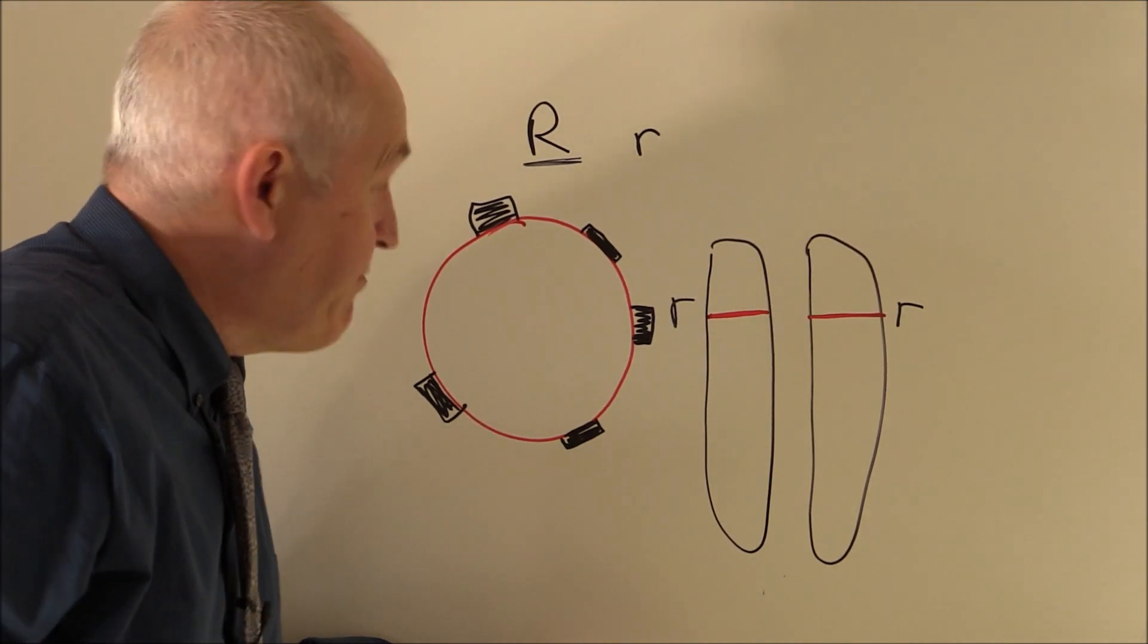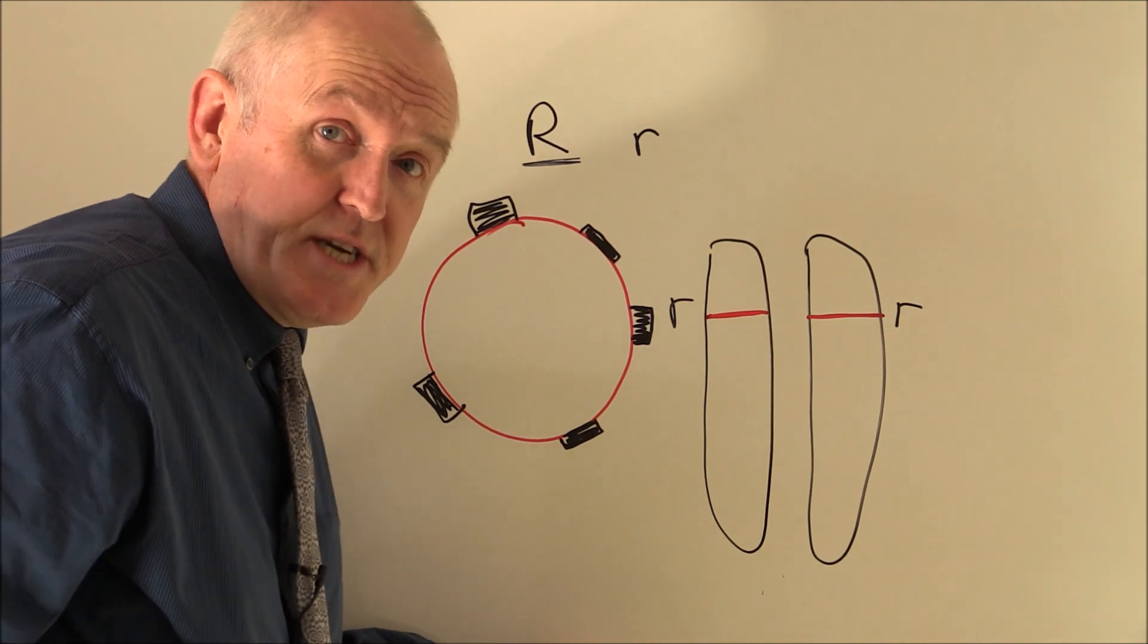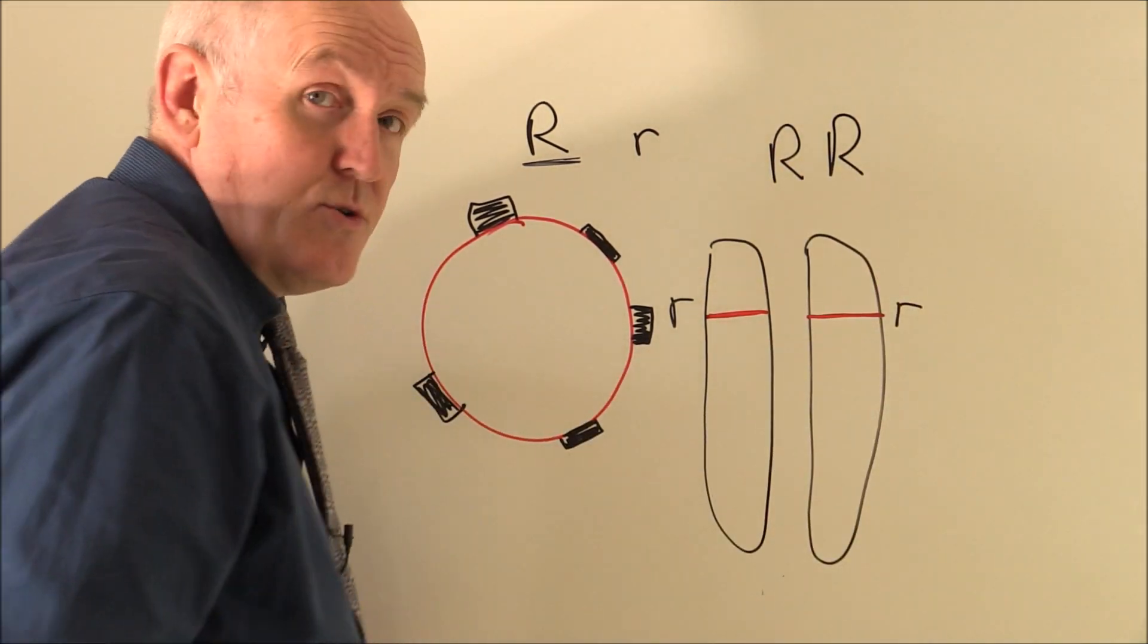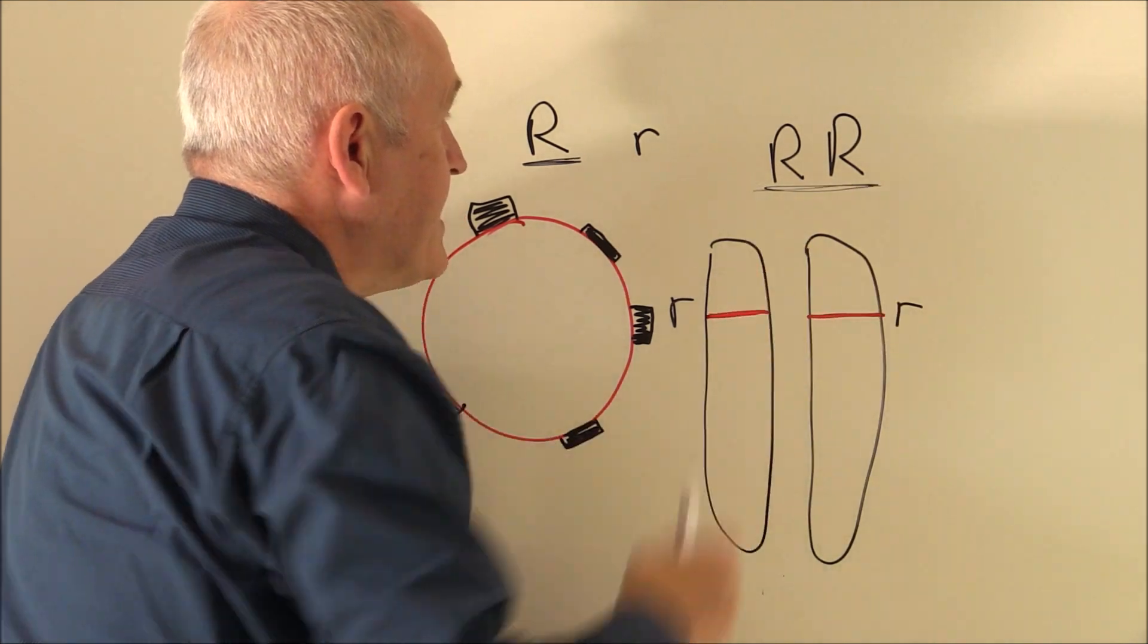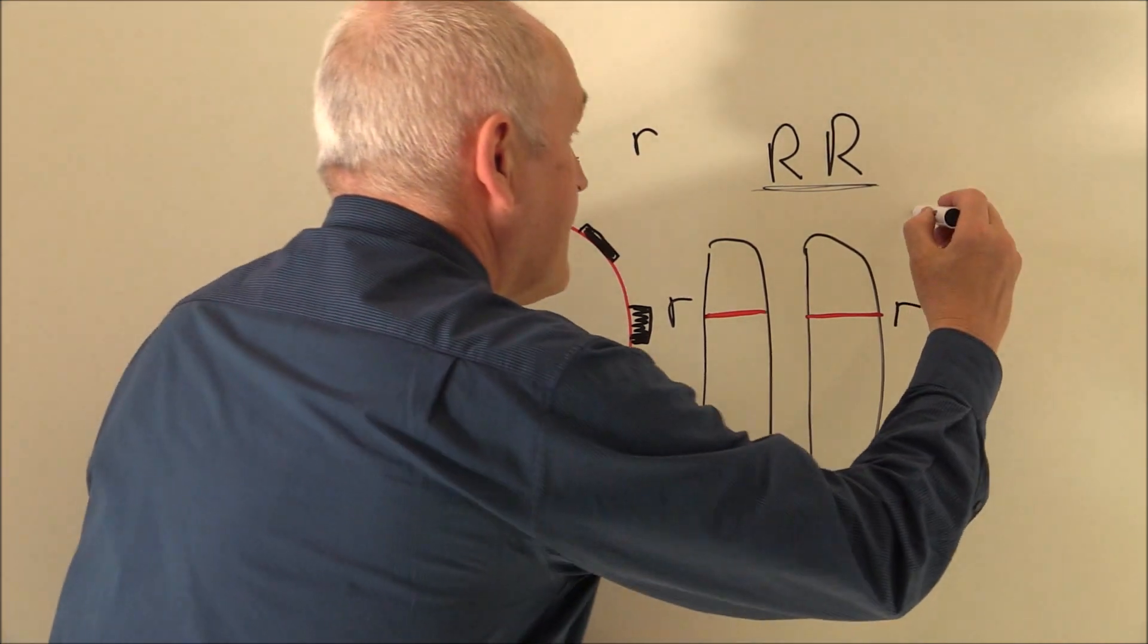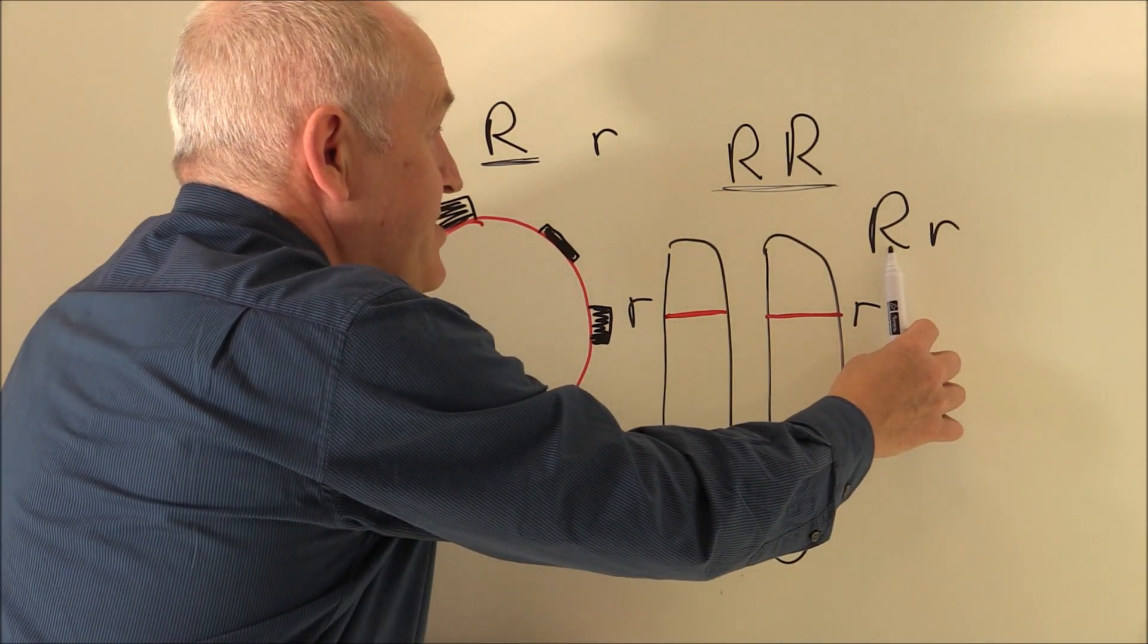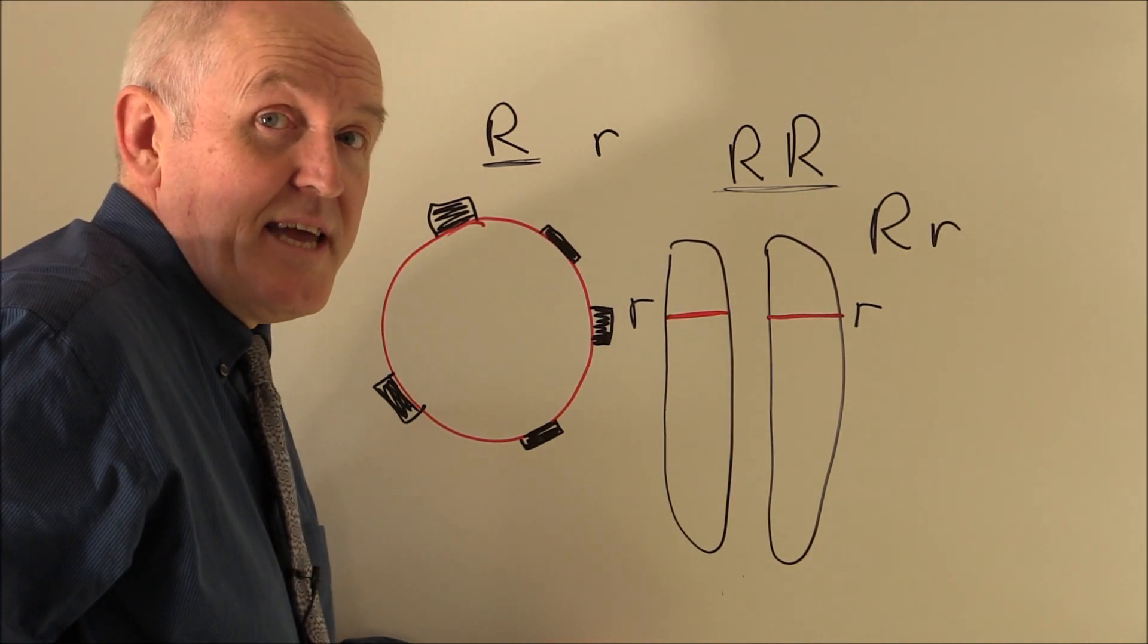But if someone is Rhesus positive, then one or both of these genes may be dominant. So if someone was RR, they had two copies of the dominant gene, I think you can see that they would be Rhesus positive. But if someone was Rr with one dominant and one recessive gene, the gene for the production of the D Rhesus factor is dominant, so it would be expressed if present.